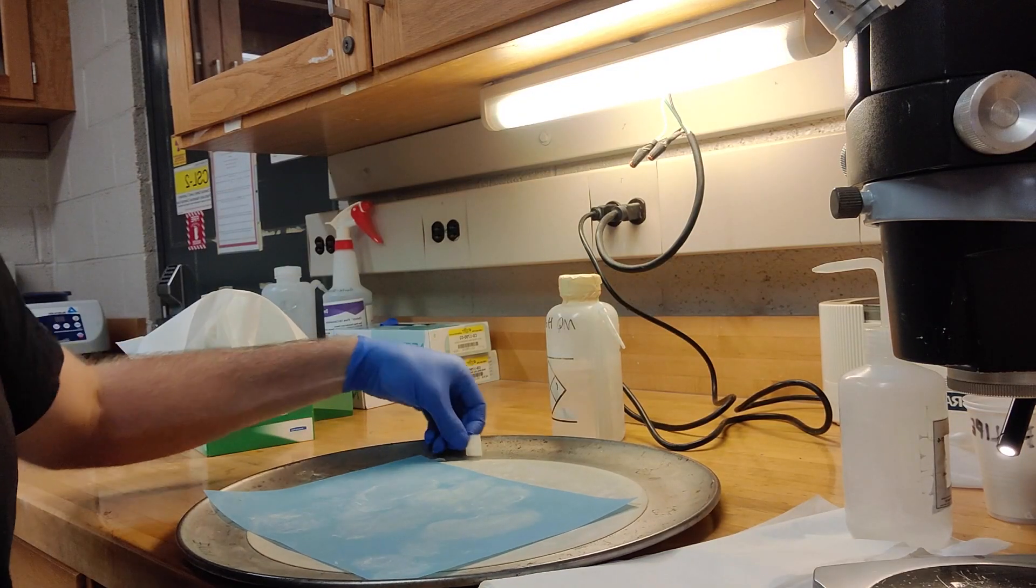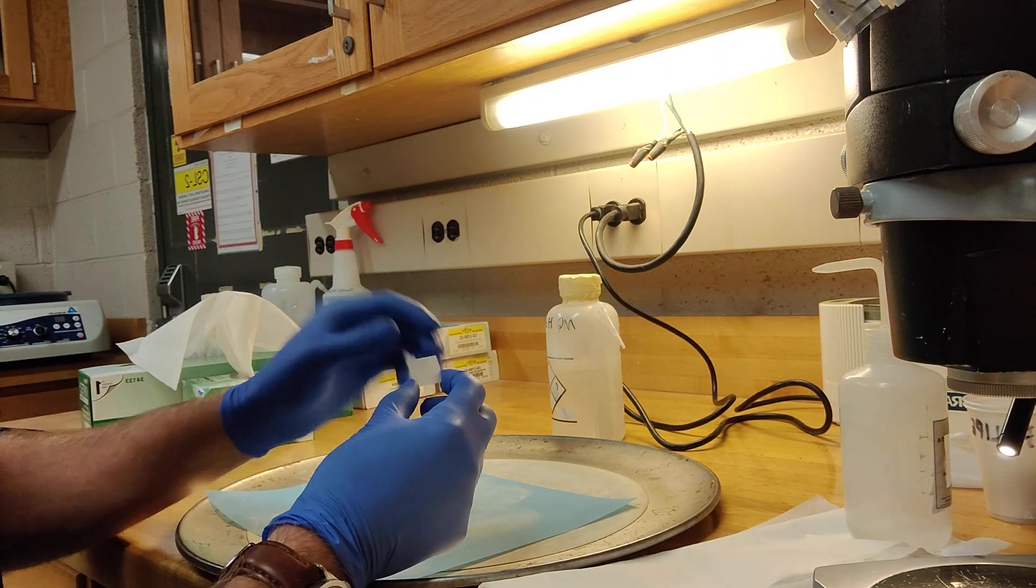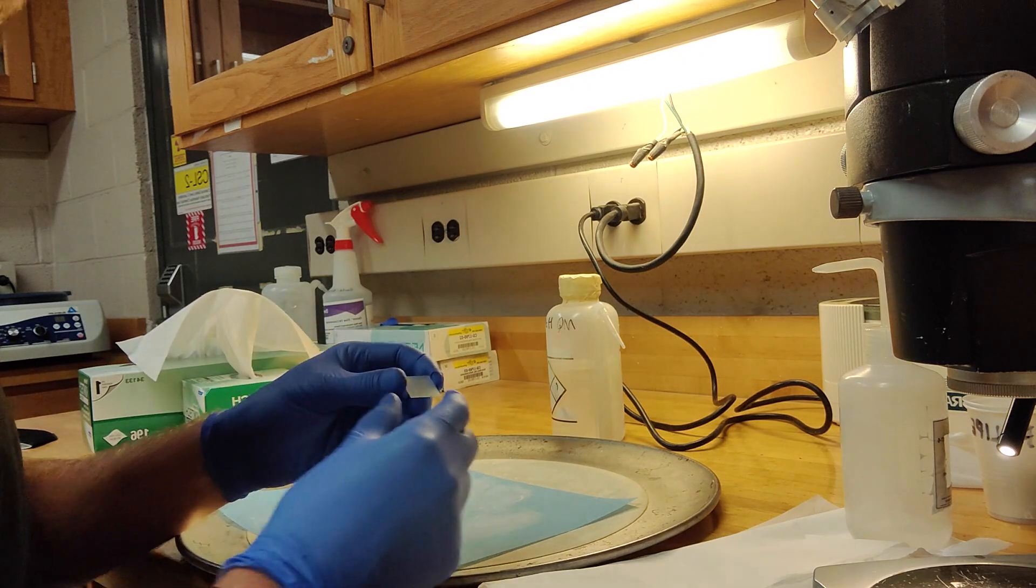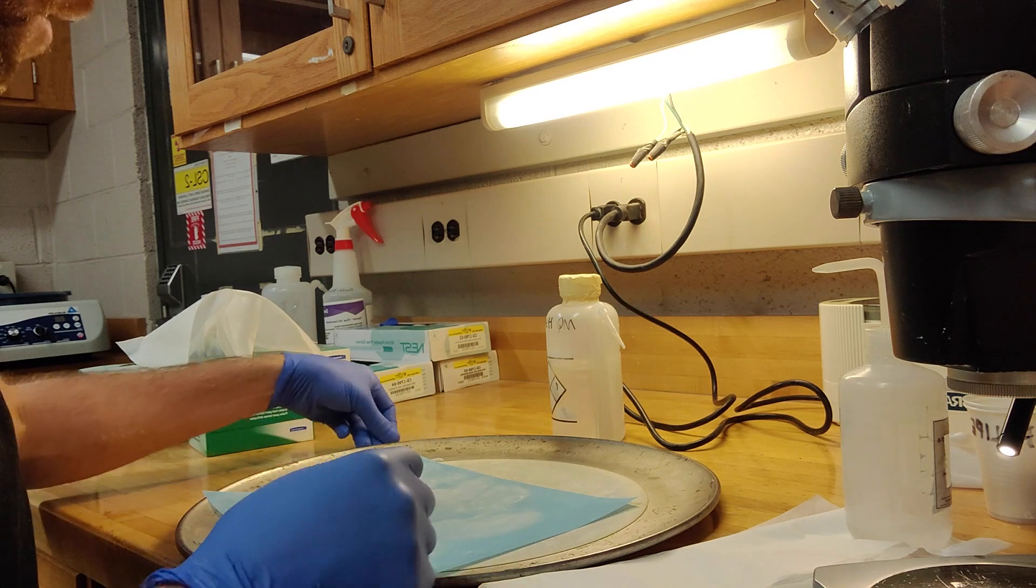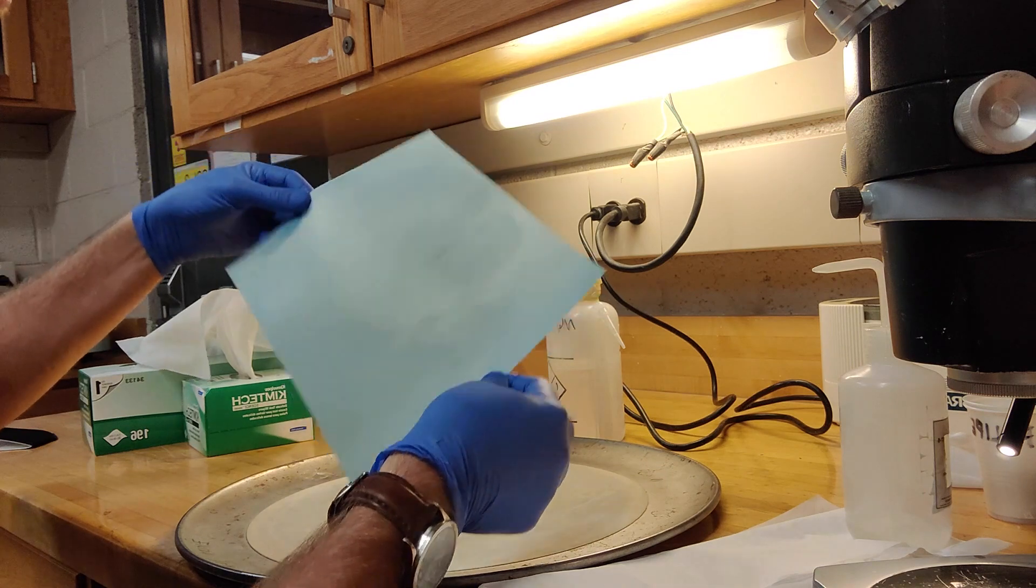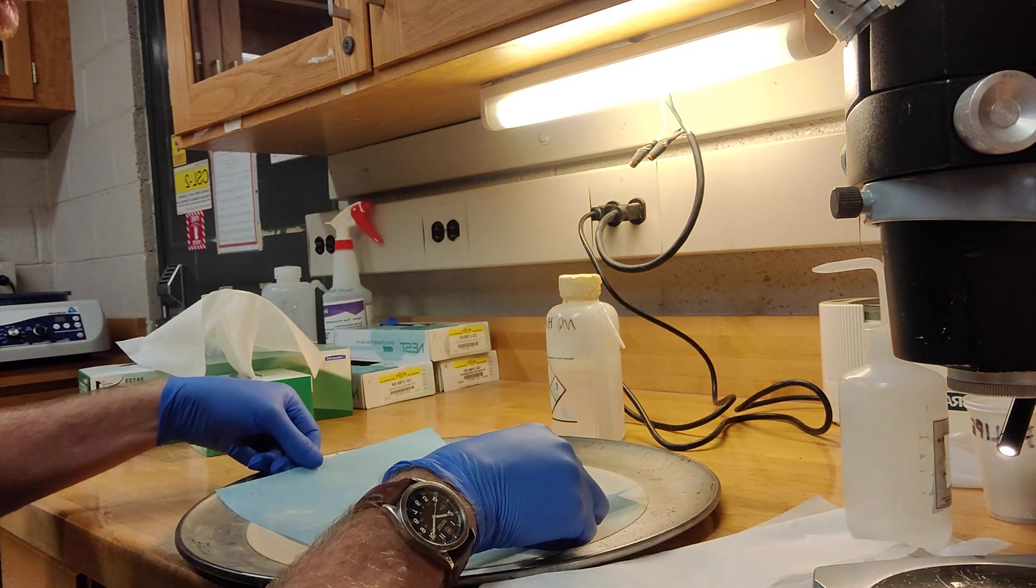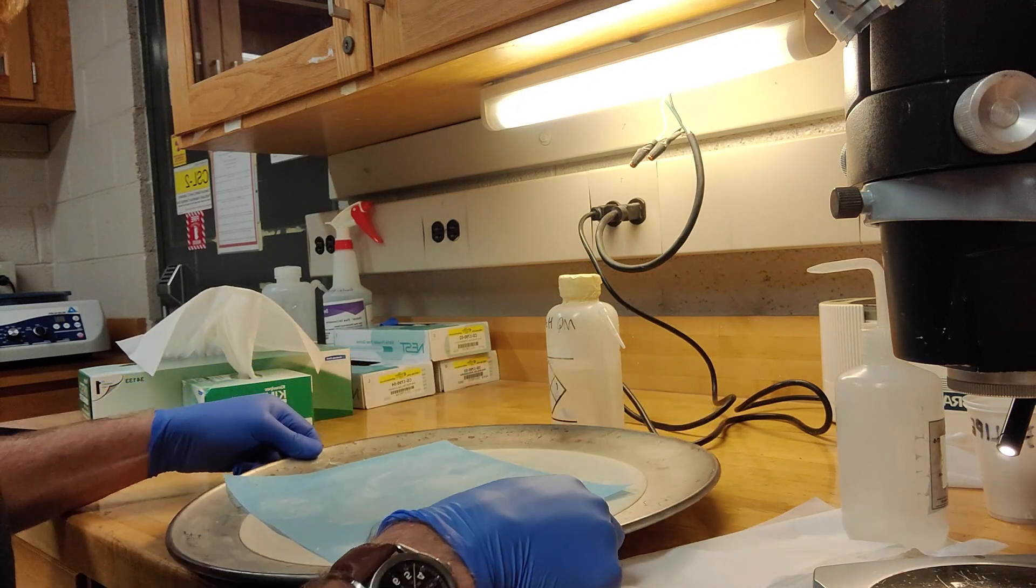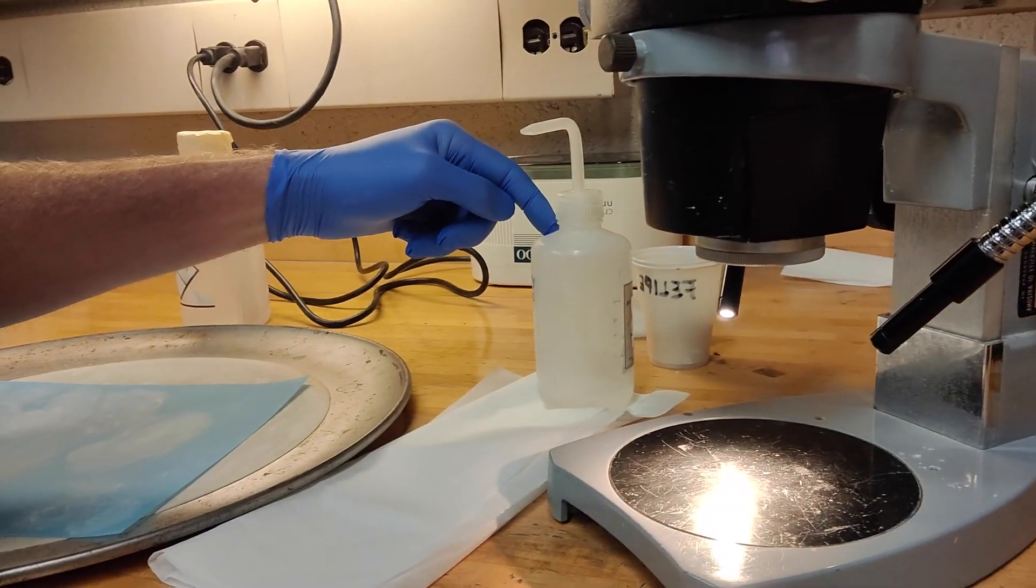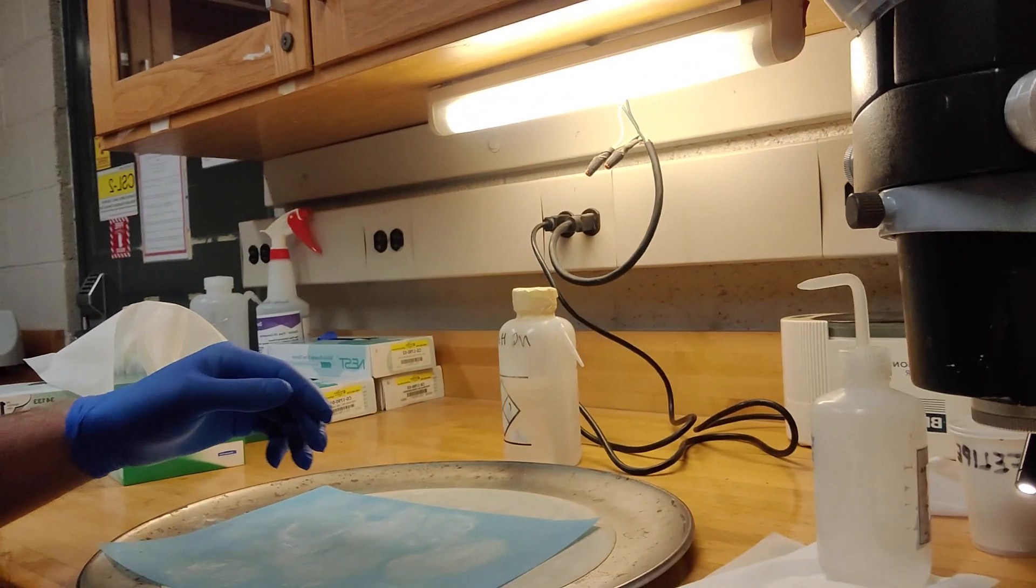Alright, so once we've done the 2500 grit polish and exposed the internal section of the apatite, we're now going to remove some of those larger scratches with the 9 micron lapping film. So it should be this blue paper that's in that drawer. The back is shiny, so we want to use that coarse side. And we can just place it in that pizza dish again. It's a similar setup. As for the grinding, we've got the ethanol and the kim wipe, and then we've got our microscope to check the samples.